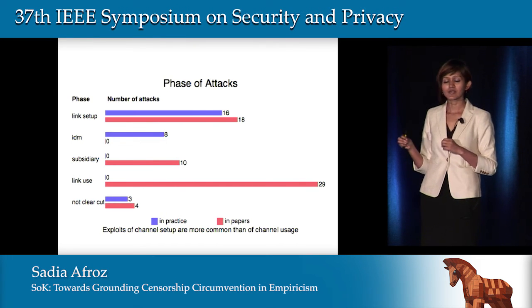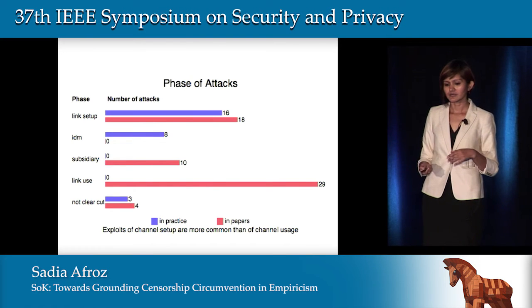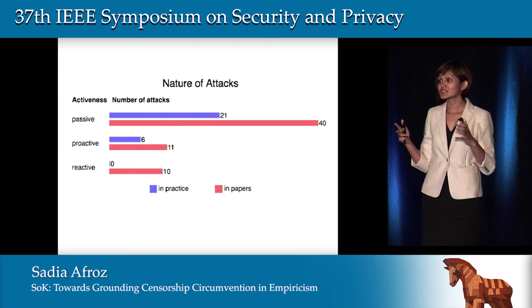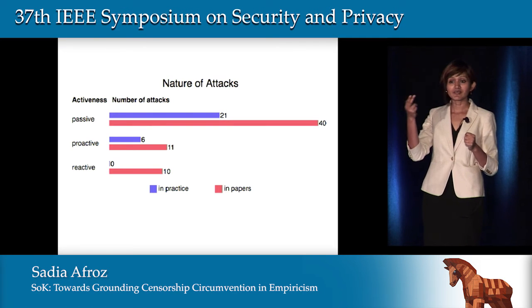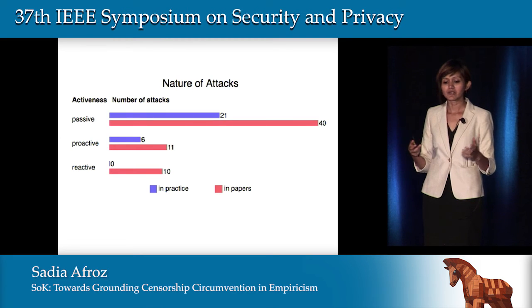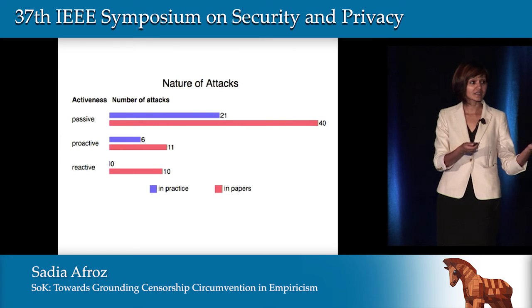Real-world censors mostly focus on attacks at the identifier management or link setup phase, whereas research censors mostly look at attacks on channel usage. We also looked at the activeness of a censor: passive censors monitor all traffic; proactive censors send traffic to a node and wait for a response; reactive censors modify the user's traffic rather than sending their own. Real-world censors are usually passive or sometimes proactive, but reactive censors appear mainly in research papers.